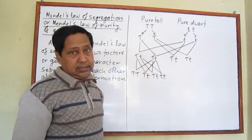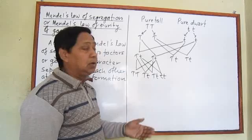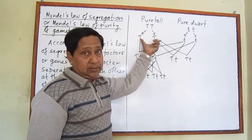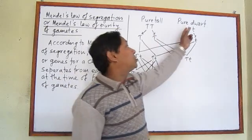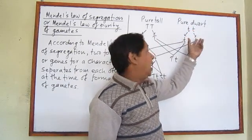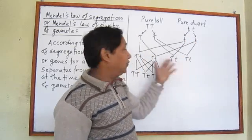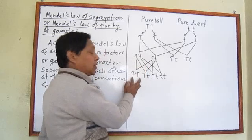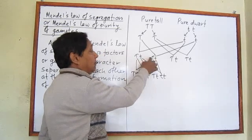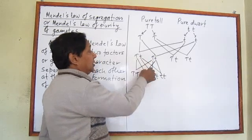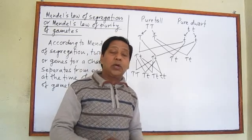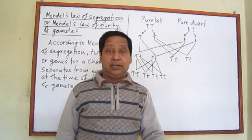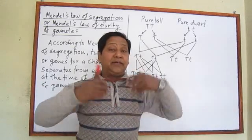At the time of gamete formation — at that time gene was not named 'gene,' he called them 'factors,' but nowadays we say gene — two genes or factors for a character separate from each other. These separated genes then rearrange to form another set of genes. The genes or factors separate from each other, and because of their separation, they combine again to form new gene sets. This was a great finding of Mendel.